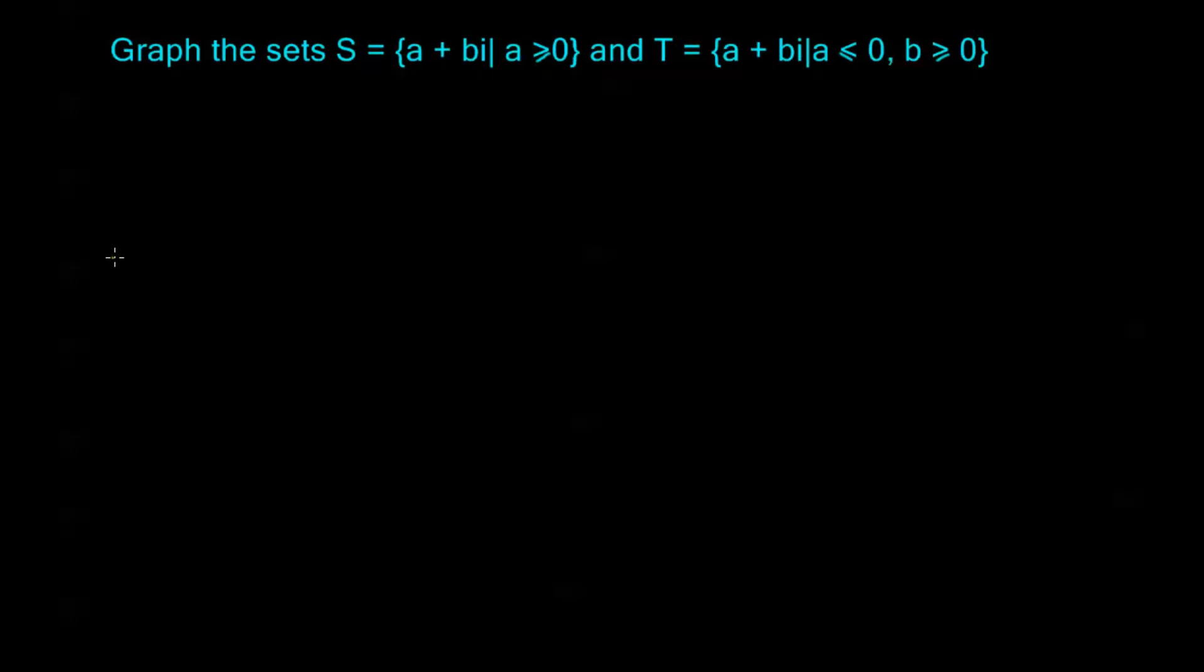So let's graph these two sets. S equals A plus BI such that A is greater than or equal to 0. We'll take a look at that first and then we'll go to T over there. I'm going to go ahead and draw out my complex plane. It's my coordinate system here that we're going to be using. So this is my real axis. This is my imaginary axis.